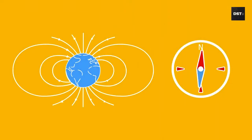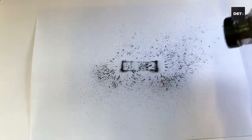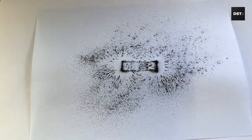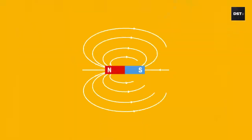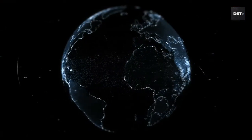Speaking of geomagnetism, we must learn what the geomagnetic field is. If we take a bar magnet and cover it with a polythene sheet and place it near some iron powder, we can clearly see that the magnet attracts the iron powder towards it. Taking a closer look, there is more iron powder at the poles of the magnet than at its center, because the magnetic power of the poles is much greater than the center.